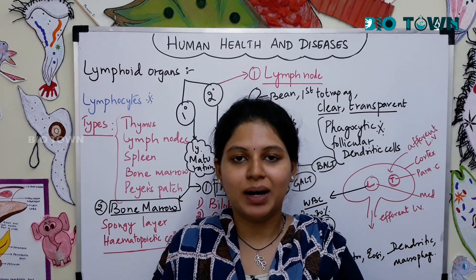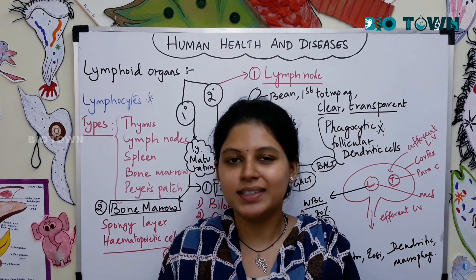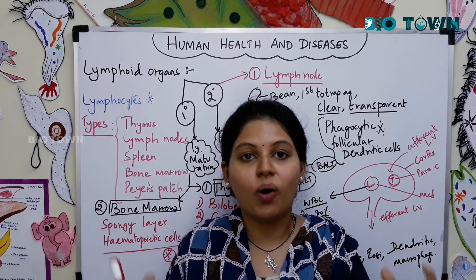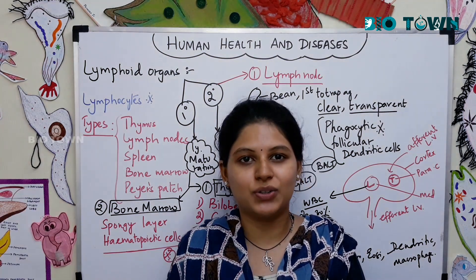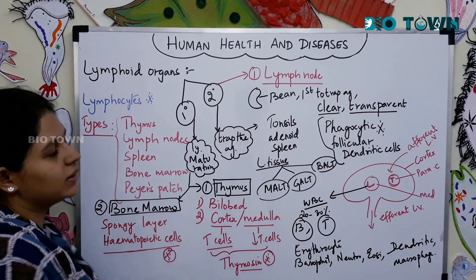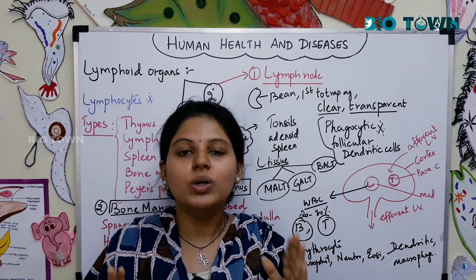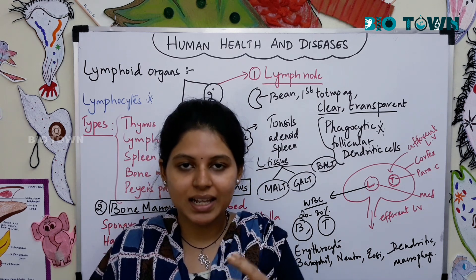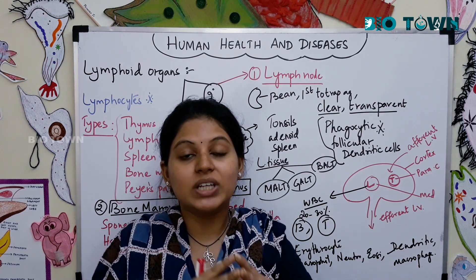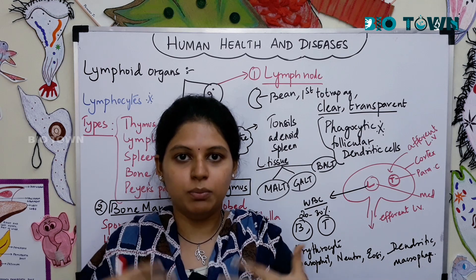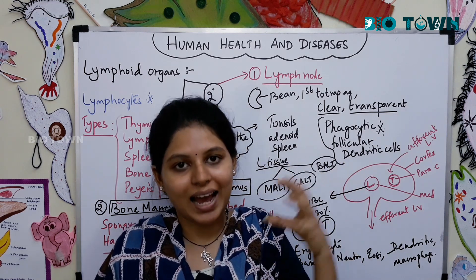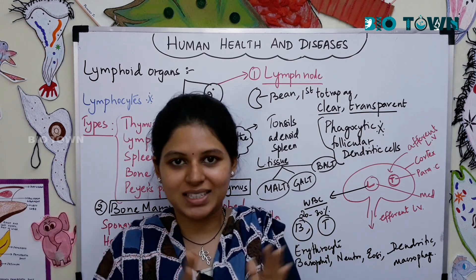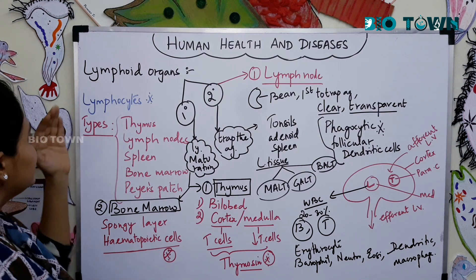In today's session we will talk about the lymphoid organs — their different divisions, how they originate, and where they are present. Lymphoid organs are those which produce lymphocytes. Lymphocytes are a division of white blood cells involved in the defense mechanism. When an antigen enters and attacks the body, lymphocytes serve as the police force to go and attack them back.